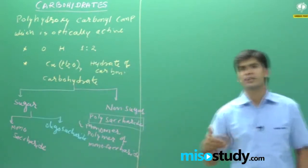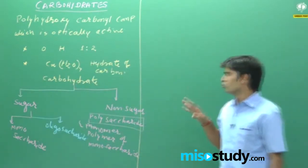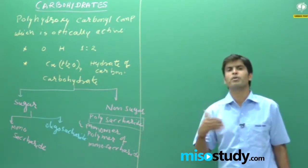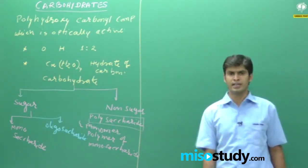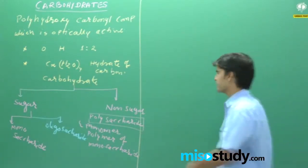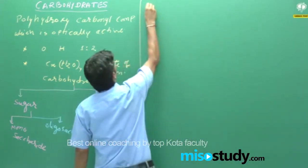Moving ahead, the monosaccharide units can be further categorized. So the first sub-classification for monosaccharides is by functional group.